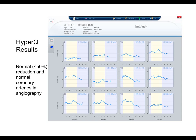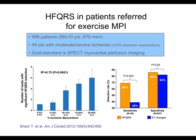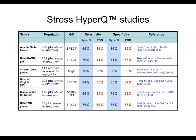HyperQ, the HFQRS analysis algorithm used to analyze the same test presented in the previous slide, demonstrates a perfectly normal result with no positive leads. A study of almost 1,000 patients compared the accuracy of HFQRS analysis versus ST changes. It demonstrated an increase in test sensitivity, correctly diagnosing 69% of patients with ischemia compared to the 39% sensitivity of conventional ECG, while obtaining a slightly better specificity. The number of leads with significant HFQRS reduction is nicely correlated to the extent of ischemia as measured by myocardial perfusion imaging.